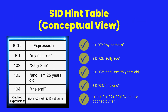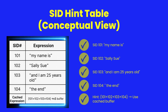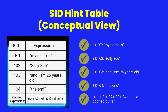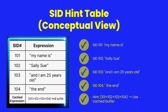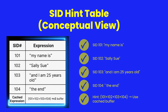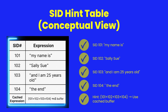This internal table tracks string IDs and how they combine. If nothing changes, ShearPower can skip recalculation and return the known result instantly. It's like a built-in memory of your expressions.